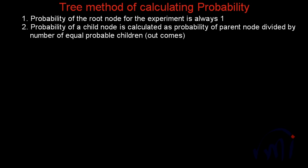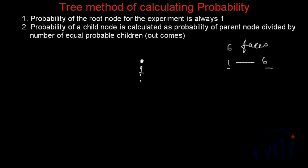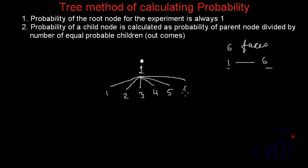As we said, the probability of the root node of the experiment is always 1. In this example we are going to throw a dice. A dice has six faces and if the dice is fair, the numbers from 1 to 6 will appear only once. So if I throw a dice there will be total six possible outcomes — you can get either 1, 2, 3, 4, 5, or 6 on the top most face, and since the dice is fair all these outcomes are equally probable.